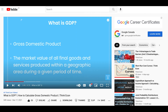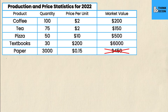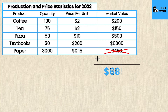Now that we've calculated the market values, let's revisit our GDP definition: the market value of all final goods and services produced within a geographical region. In our economy we have four final goods and one intermediate good — that intermediate good is paper. Paper is not sold as a final product but is only used as an intermediate good to produce the other four. So when calculating GDP we do not include paper because it's not a final good. We simply take all the remaining market values and add them up. When totaling them up we get $6,850 — that's the nominal GDP in this simple economy with four final products and one intermediate product. To recap: calculate the market value, determine what is a final good versus an intermediate good, exclude the intermediate goods, and sum up all the market values.